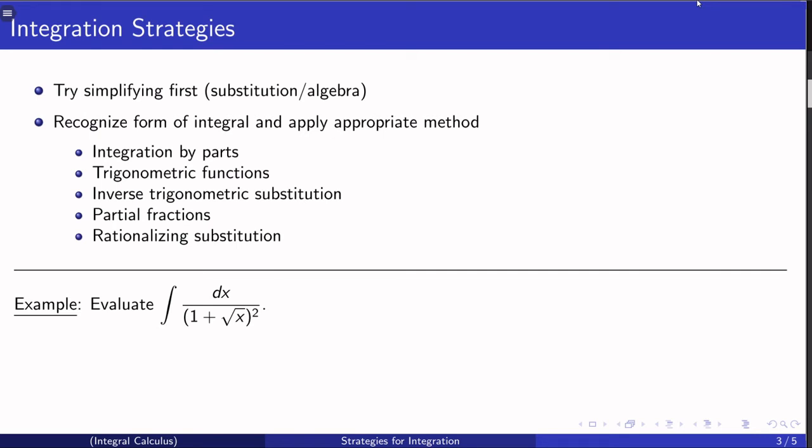Otherwise, there are a number of methods that we've already seen, like integration by parts. Remember, that's uv minus integral of v du, when you can recognize your integral as u dv. And we use integration by parts when you can make the integral easier by differentiating one factor and integrating another. And we've seen that before.